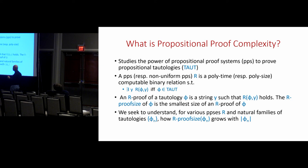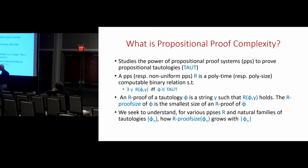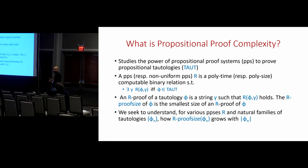The key thing is the polytime computability of the relation: if you have a theorem φ and a candidate proof y, you can check it in polynomial time. You can also define a non-uniform version requiring only polynomial-size circuit verification. The interpretation of y is the proof in the system R, and the proof size of φ is the size of the smallest proof. What we seek to understand is, for various proof systems and natural families of tautologies, how the proof size in R grows with the size of the tautology.